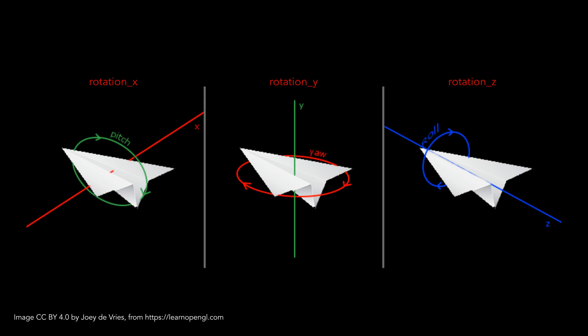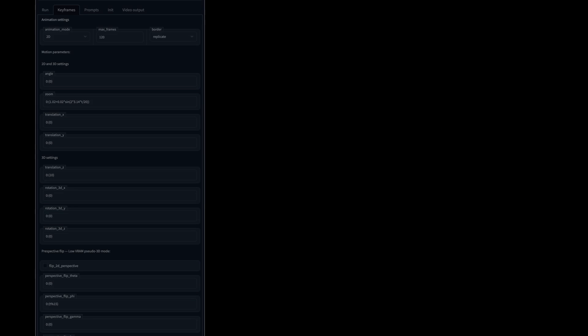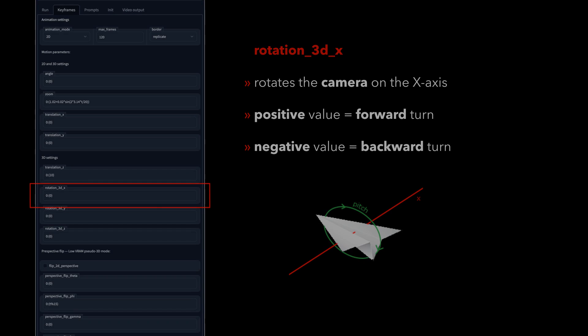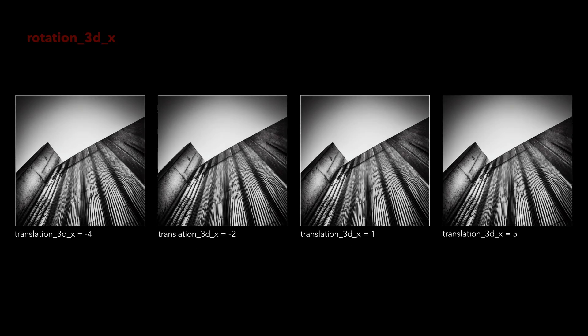The 3D rotation parameters are using the axis as a rotation base, and if you ever worked with a 3D program, this will be familiar to you. The rotation 3D x parameter will rotate the camera forward and backwards, fixated on the x-axis. A positive value will turn it up, and a negative value will turn it down.